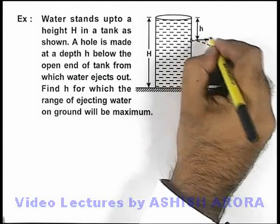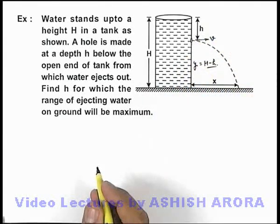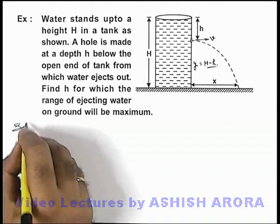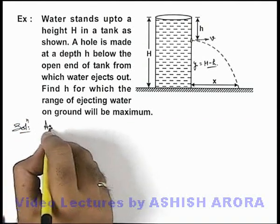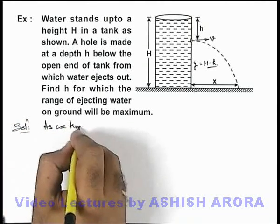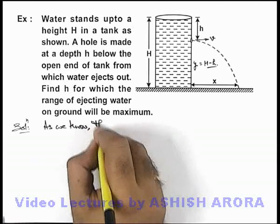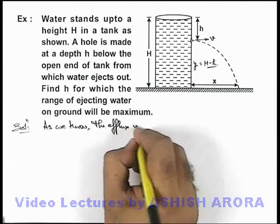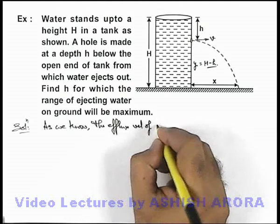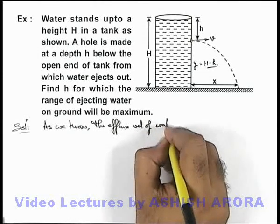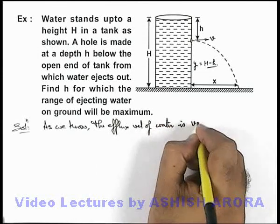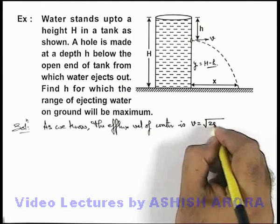In this situation, efflux velocity by Torricelli's theorem we already know. As we know, the flux velocity of water, this v can be written as root 2gh.